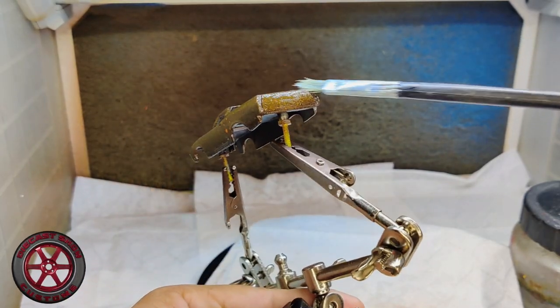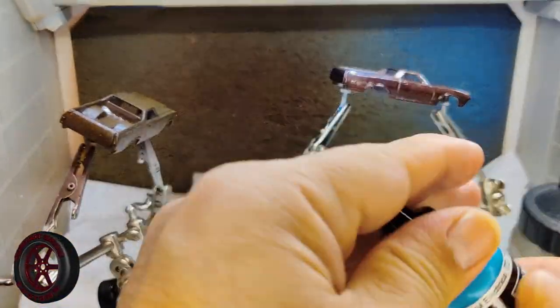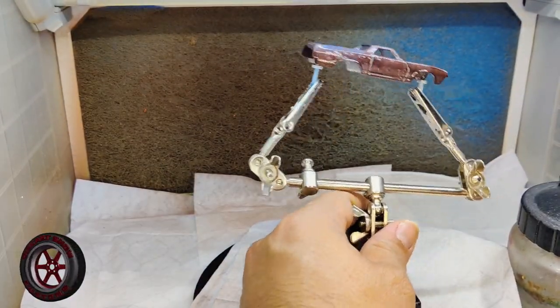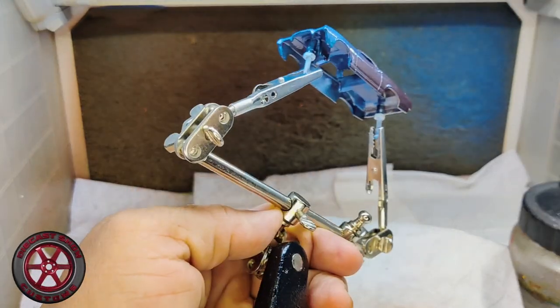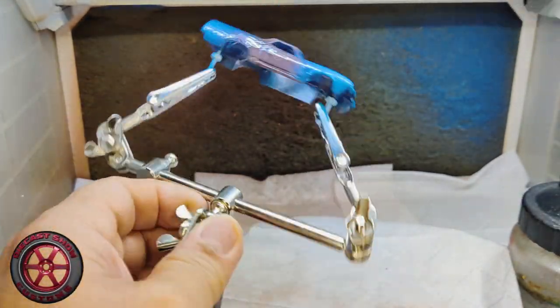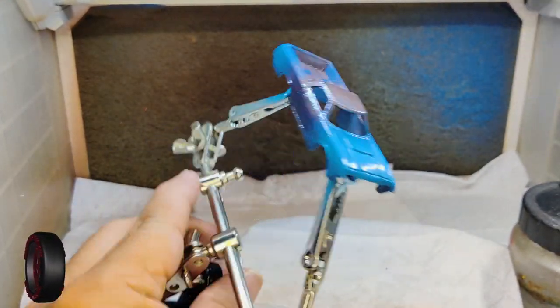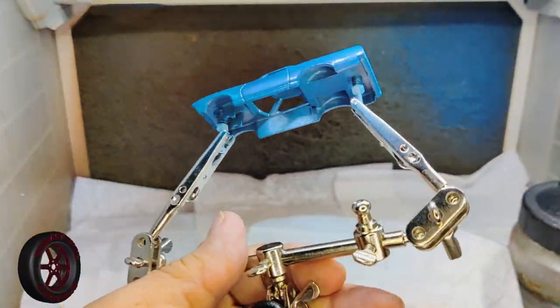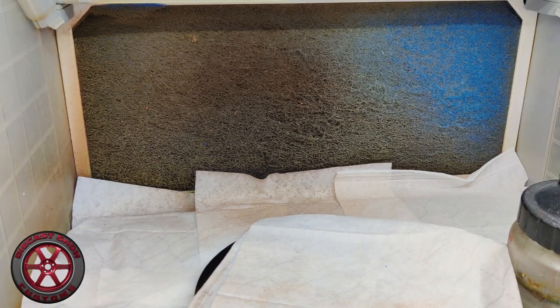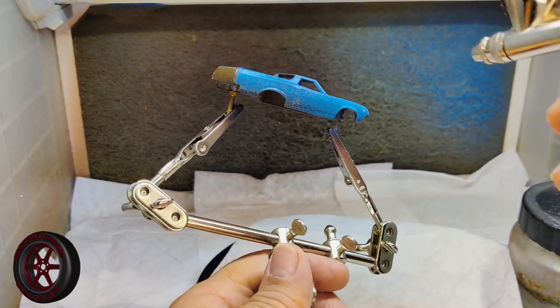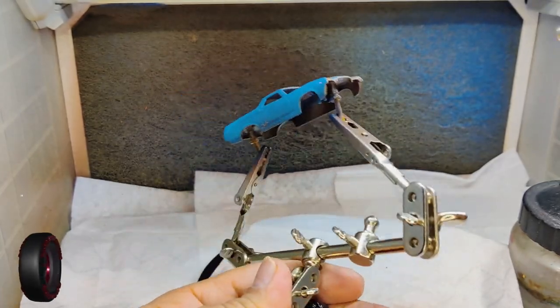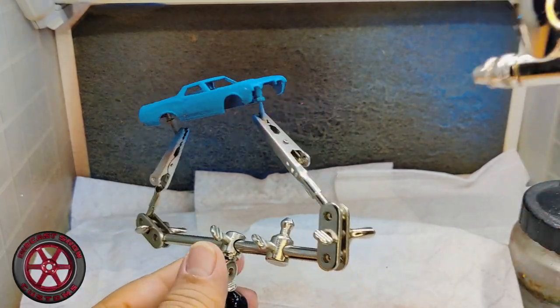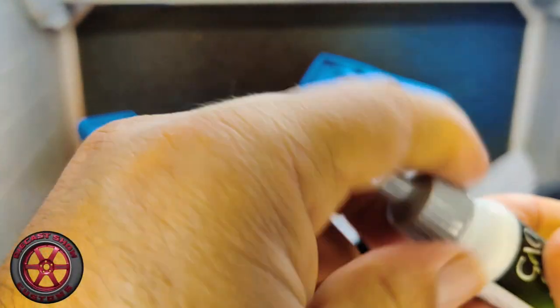So same process. I sped up this part of the video. Again, I'm using airbrush but you really don't have to do this with an airbrush. You could do this by hand. I'm using that color which is Vallejo Game Air, which is paint that you could just shoot with an airbrush. You don't have to thin it down. I like this color because it looks old.